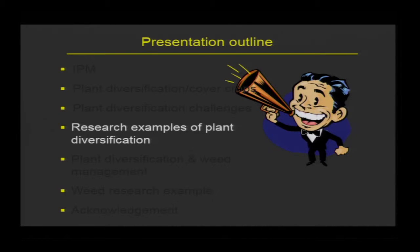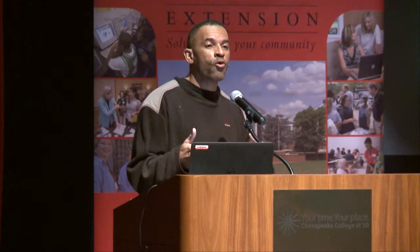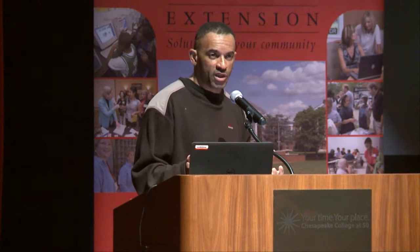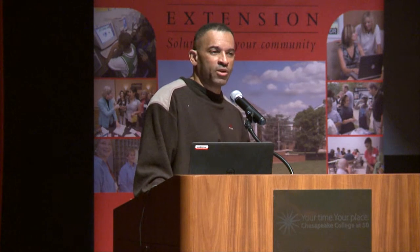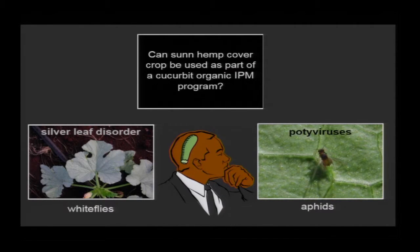Now I'm going to give some research examples. I'll start with some work I did in Hawaii. In this instance, we're trying to use protective plants — plant diversification as a way to protect plants from an insect-transmitted disease or insect plant impairment. The crop I was interested in was squash.